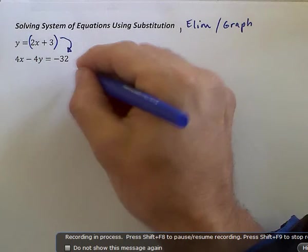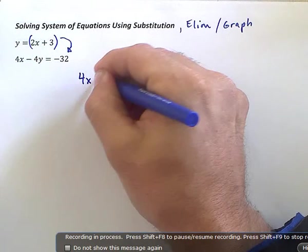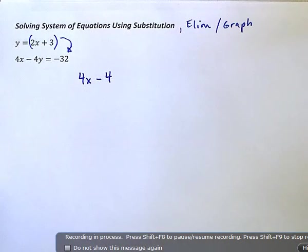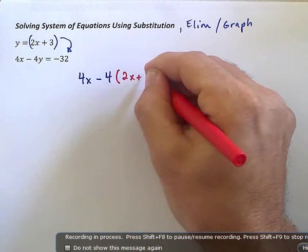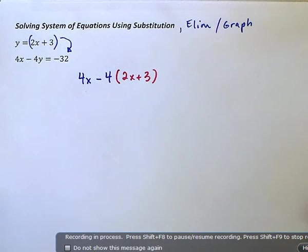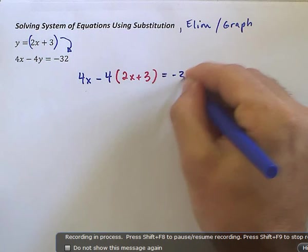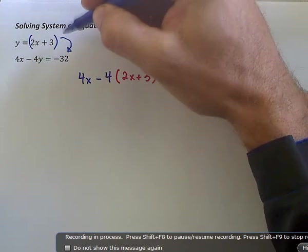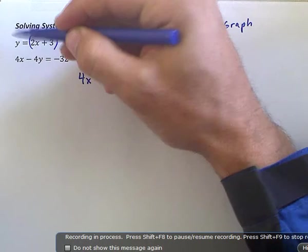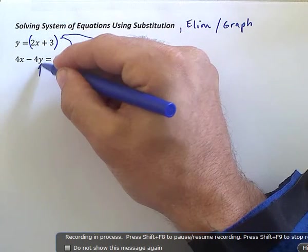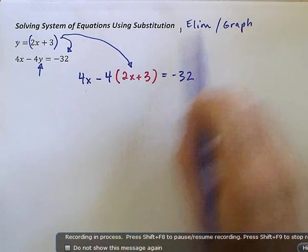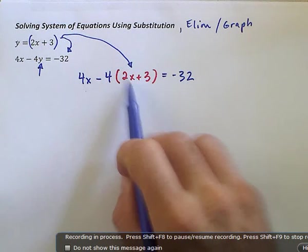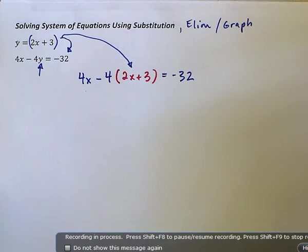So 4x minus 4, what is y? Well, y is 2x plus 3 equal to negative 32. And a couple things have happened here. One, I've put this in here because I know that's what y is equal to. I've replaced that. But I've also, like elimination, I've got it to where I'm only working with one variable. Now let's rewrite this.